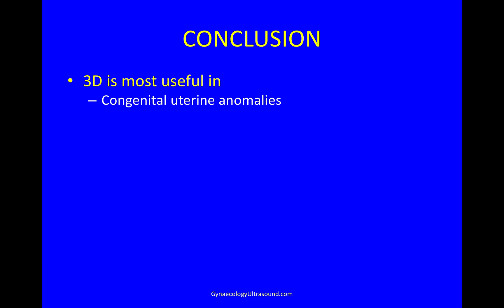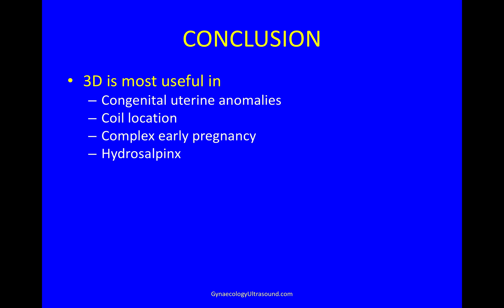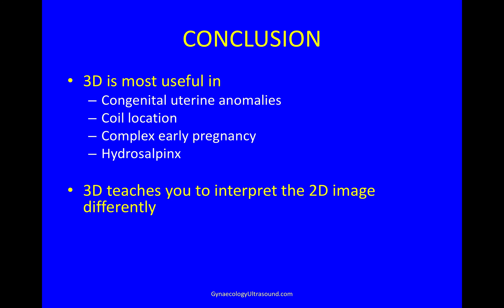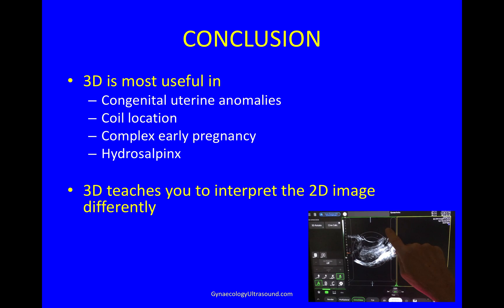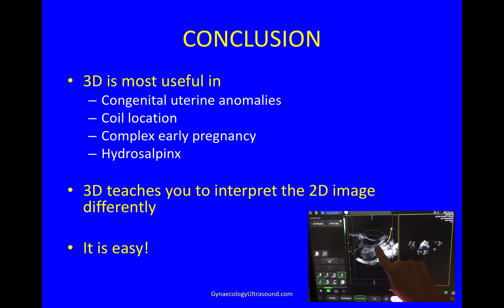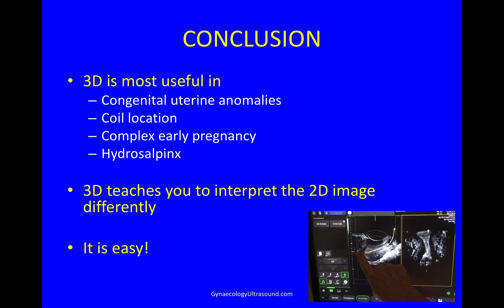In conclusion, 3D is most useful in congenital uterine anomalies, coil location, complex early pregnancy, and hydrosalpinx. Using 3D regularly teaches you to interpret the 2D image differently. It is very interesting, and it has become very easy to take a good 3D image.